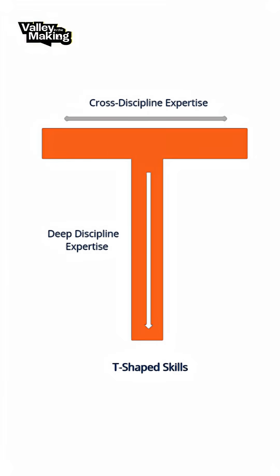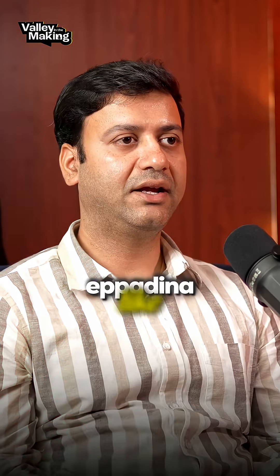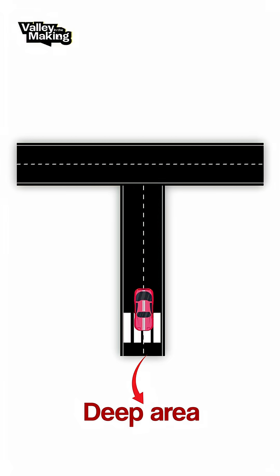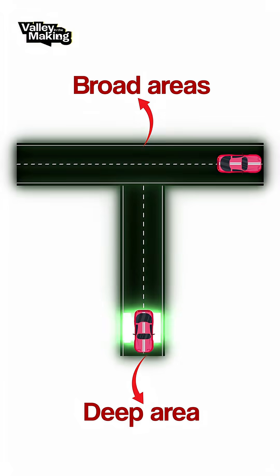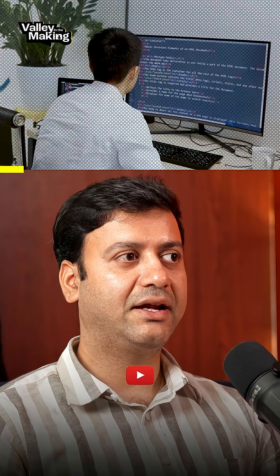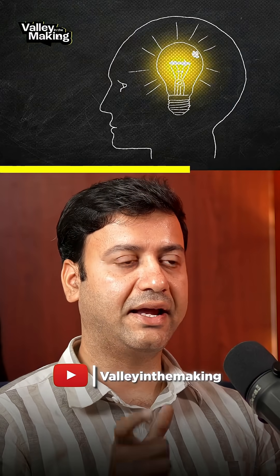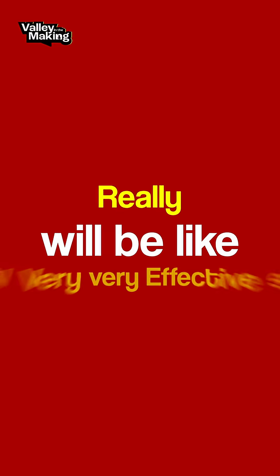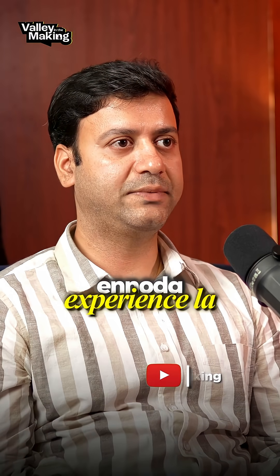If you add DevOps to your background, that is the T-shape — I think that's the right term. We should go deep into one area, but we should have an understanding of broad areas. That is the T-shape. If you are a developer, you will have a broad idea of how things work, and if you then want DevOps, it will be very effective.